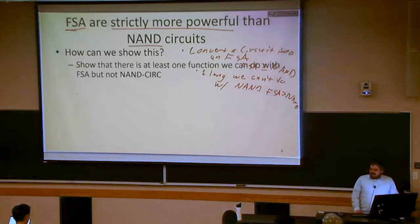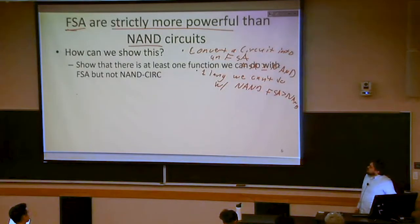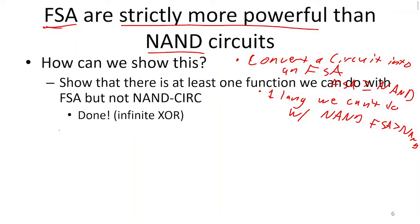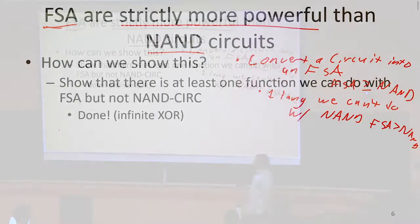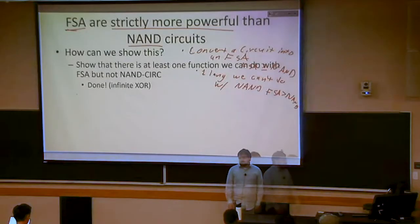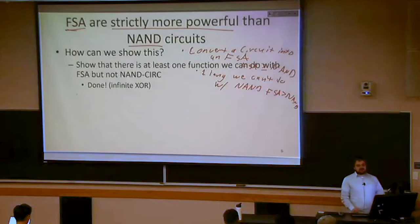We're going to do the second part first: show there's at least one function we can do with finite state automata but not NAND. Infinite NAND — or infinite XOR — is a good example. We've already shown we can do infinite NAND, and NAND circuits can't do infinite functions. So that's already one thing finite state automata can do that NAND circuits cannot.